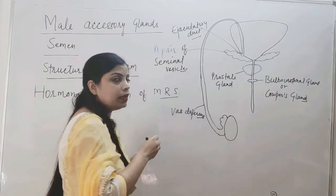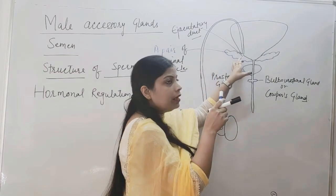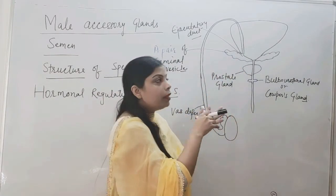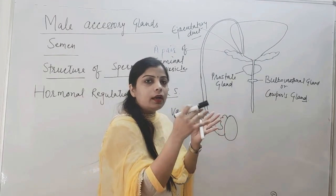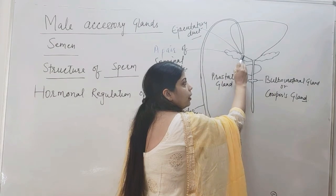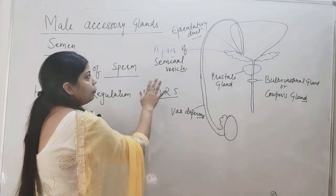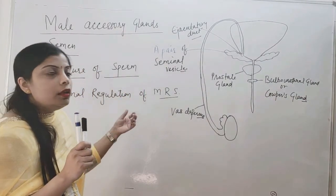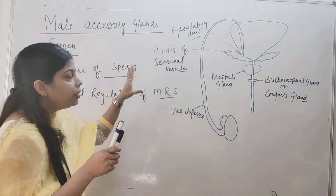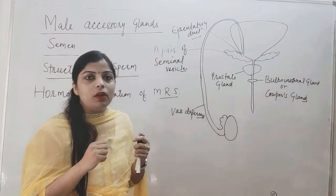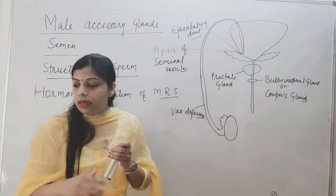The ejaculatory duct is formed when the vas deferens joins with the seminal vesicle. The sperm and the secretion of the seminal vesicle mix together here, and this mixture then flows forward through the ejaculatory duct and travels through the urethra. These glands are going to secrete various secretions, and we will now discuss what type of secretions these are and what role these glands play in semen.